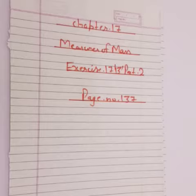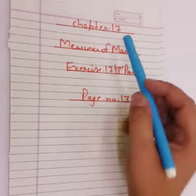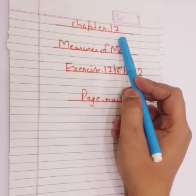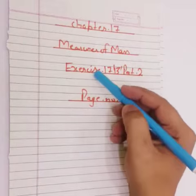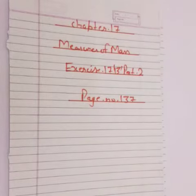Welcome to Rasa International School Online Classes. Today I will teach you Chapter 17 of Class 3. Chapter name is Measures of Mass Exercise 17b Part 2. It is on Book Page No. 187.